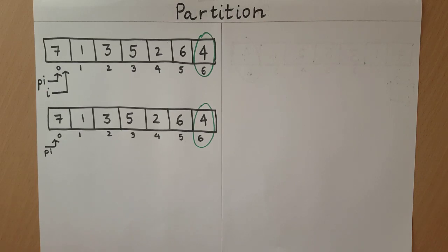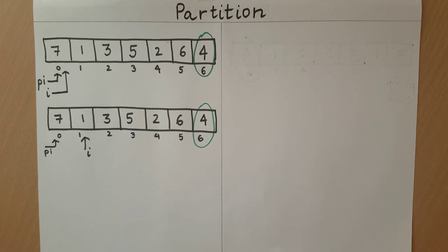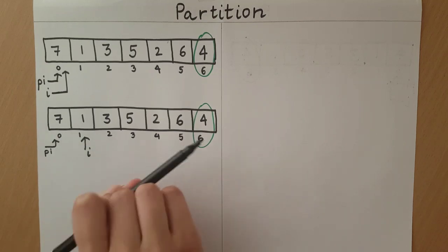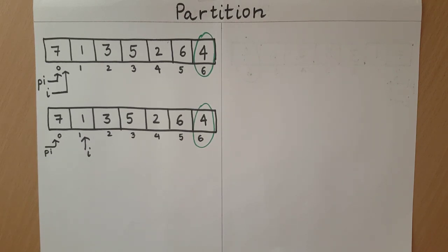Upon incrementing I, I will become 1. Now we check the element at I. If we swap the element at PI and the pivot, 4 will come here and 7 will come here. The element at I, being 1, will appear to the right of 4. However, 1 is lesser than 4 and yet it will appear to the right of 4. Hence this element violates the condition that PI is the correct index.